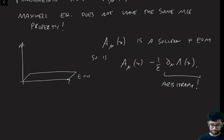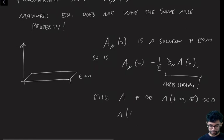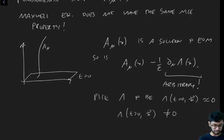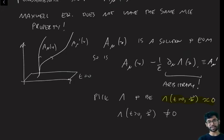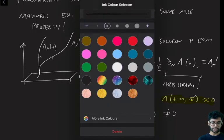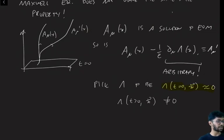So now, for example, if I pick lambda to be something such that lambda at t equals zero, x is zero, but lambda for t greater than zero and spatial x is not zero, then here's one solution to the equations of motion. Let me call this A_mu of x. And if I now consider this to be A_mu prime of x, A_mu prime is going to agree with A_mu at early times because lambda there is zero, but it's going to disagree at late times. Yet by gauge invariance, it will still be a solution to the equations of motion. So what this means is the Maxwell equations do not uniquely fix the time evolution of A_mu. And that's just a fact.